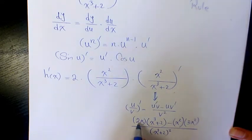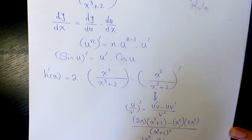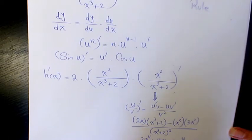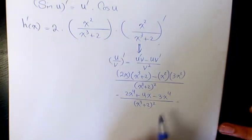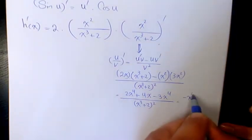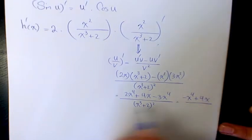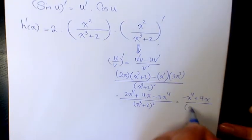Expanding the numerator: 2x times x cubed gives 2x to the power of 4, plus 4x, minus 3x to the power of 4, divided by x cubed plus 2 to the power of 2. When you simplify, that becomes negative x to the power of 4 plus 4x, over x cubed plus 2 to the power of 2.